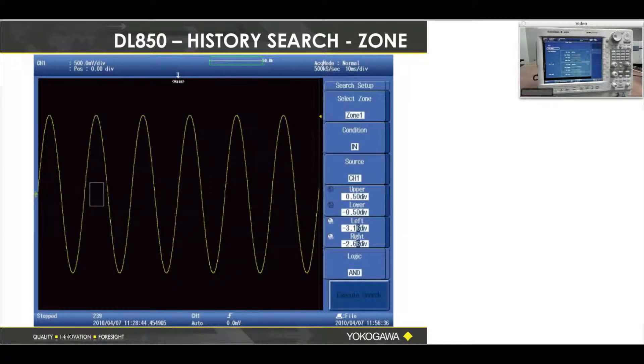History does have a very powerful search mode. So I've drawn this little box right here—it's hard to see, but inside that sine wave I can tell the DL850 to find all of the acquisitions in history. Again, this is a history feature—find all of the acquisitions where this box had some segment of waveform in it.